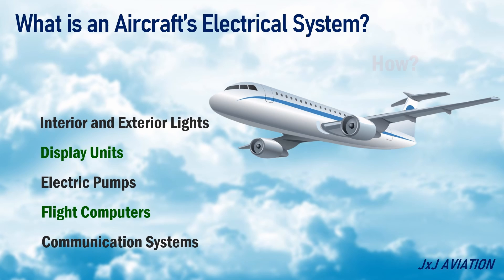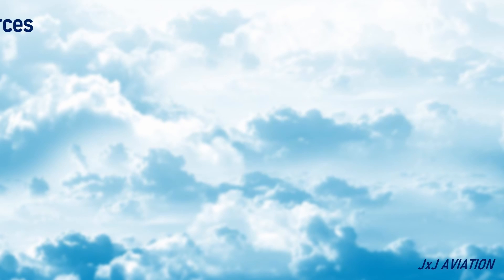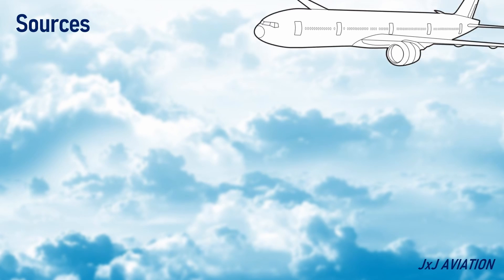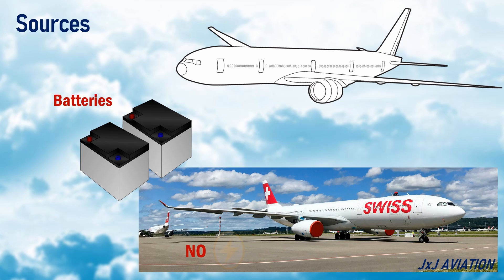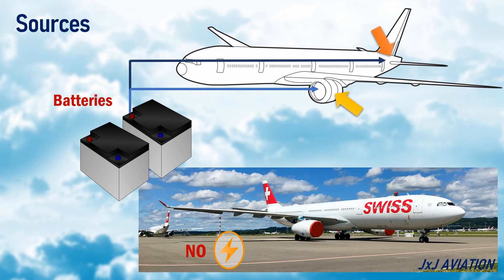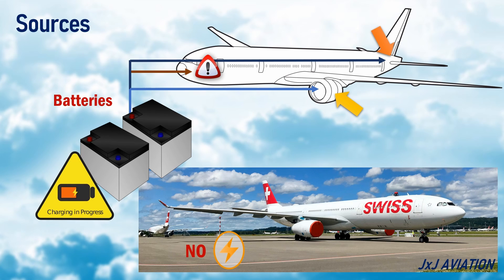Now let's look at how an aircraft's electrical system functions. Sources of electric power: Most aircraft have batteries, which store and supply electrical power when required. When an aircraft is on the ground and an external power supply is not available, the battery becomes the only available power source. The batteries may be used to start the engines, the auxiliary power unit (APU), or to supply critical systems in cases of emergencies. The electrical system recharges the battery when the battery power decreases, if a different power source is available.